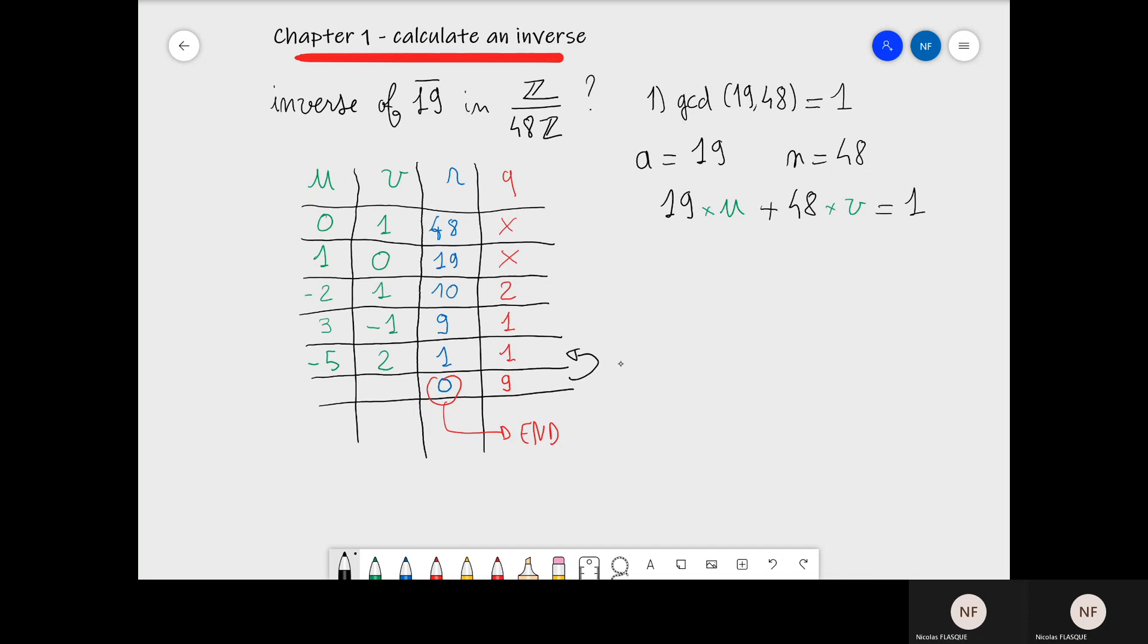We know that we have the results on the line above. So U is minus 5, V is 2, and the GCD is 1. We knew the GCD before, but the algorithm tells us that it's equal to 1. So that's all for this calculation.